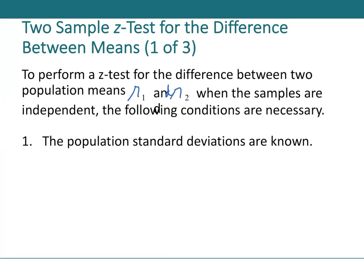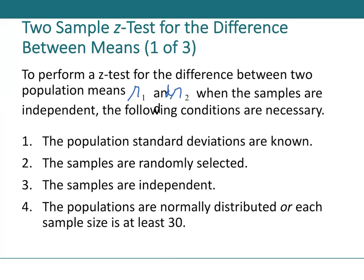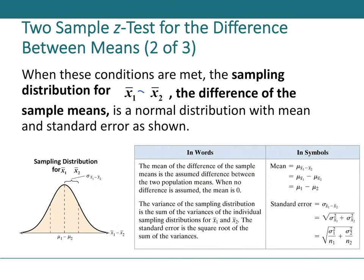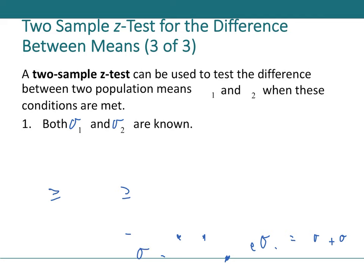To perform a two-sample z-test for the difference between population means: samples must be independent, population standard deviations known, both samples randomly selected, and both n ≥ 30 or both populations normal. When met, the sampling distribution of x̄₁ - x̄₂ is approximately normal and the z-test applies.